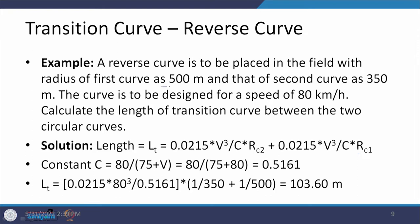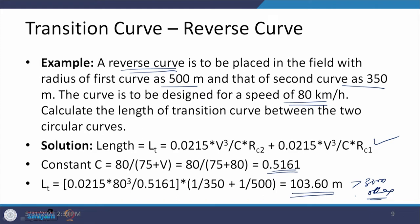Using the same values — R1 = 500 m, R2 = 350 m, V = 80 km/h — we get C = 0.5161, and the total transition length comes out to 103.60 meters, which is much more than 30 meters. So this is acceptable, and we can provide approximately 104 meters as the length of the transition curve between these two reverse curves.